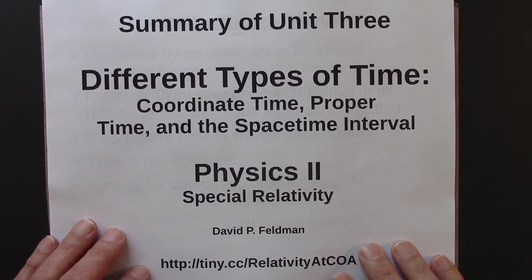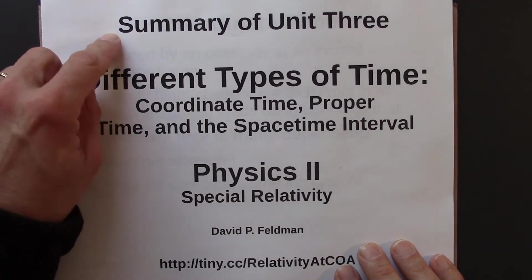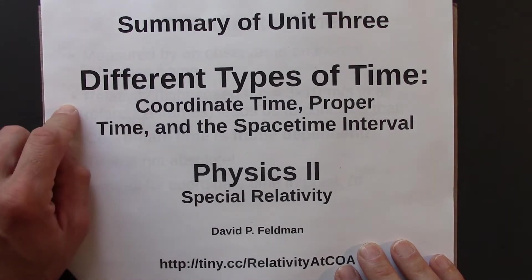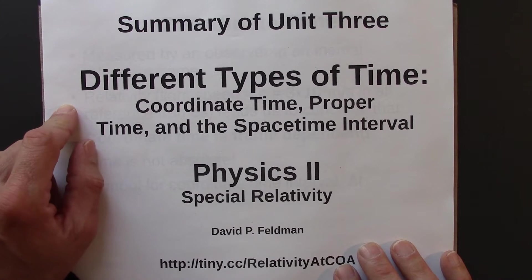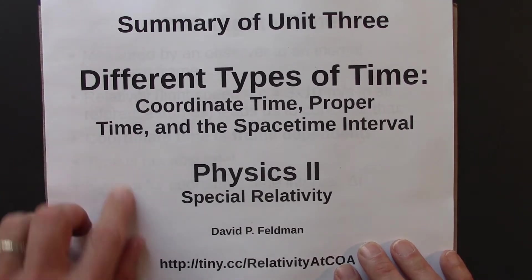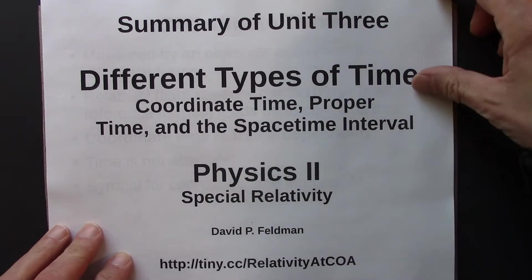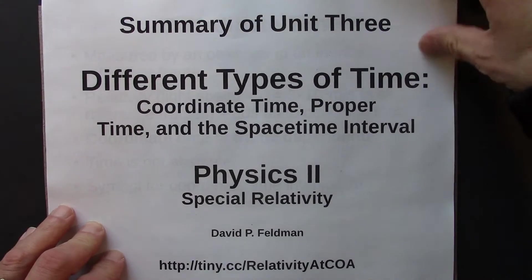Let's review what we've covered in Unit 3. Unit 3 is about different types of time, or different types of time intervals: coordinate time, proper time, and the space-time interval.